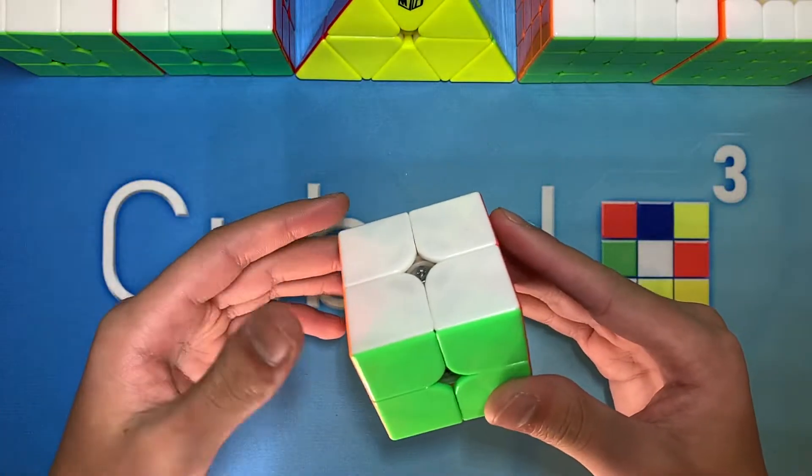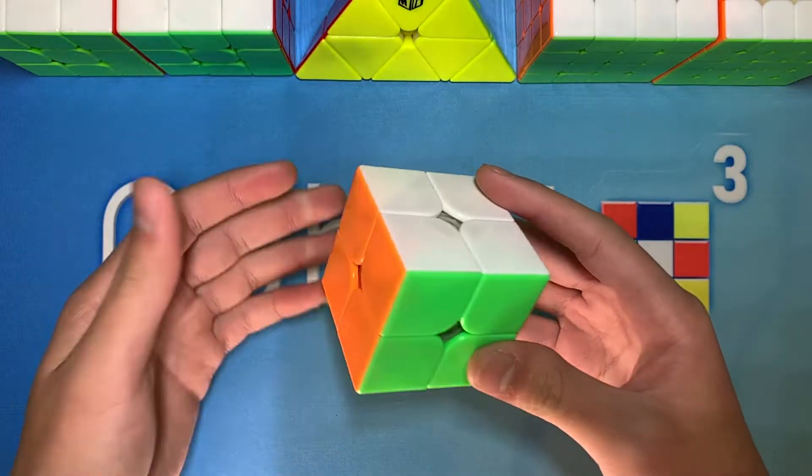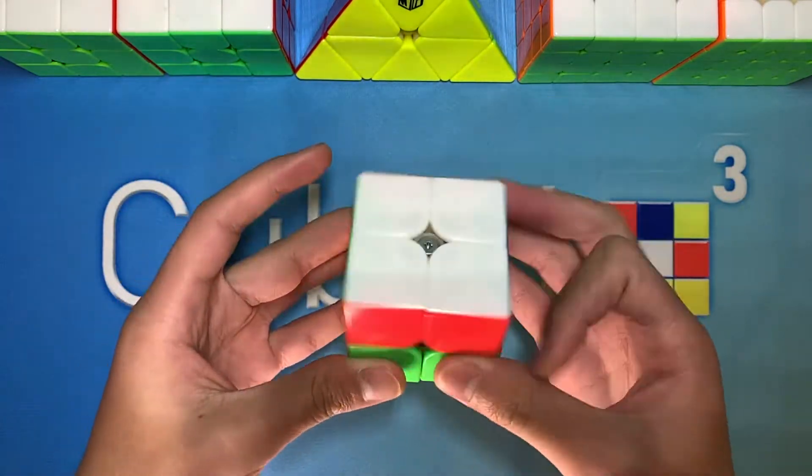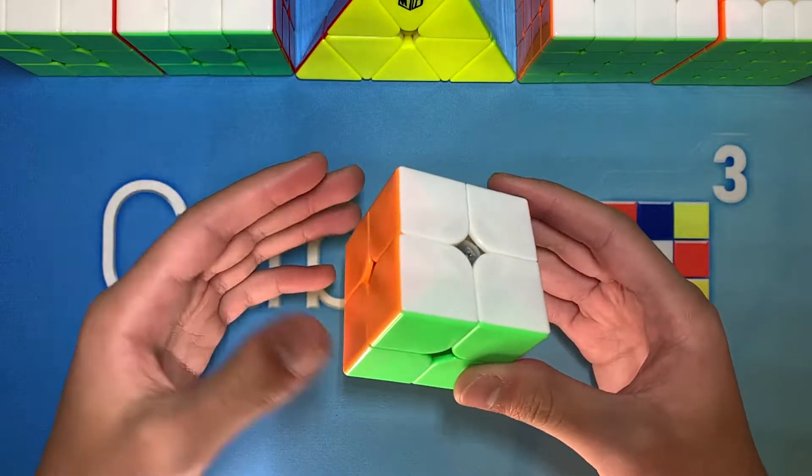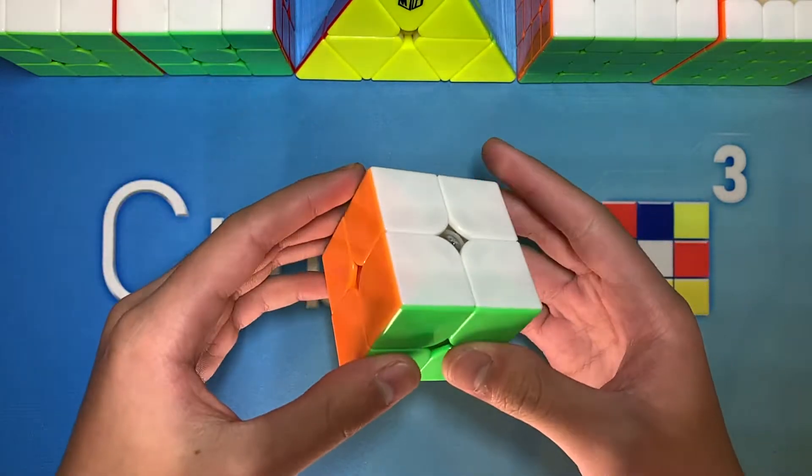Starting off with 2x2, this is the cube that I've been using for a while and as you probably already know, it's the YJMGC 2x2. 2x2 is an event that I rarely ever practice so getting a sub 5 average is probably all I'm going for.